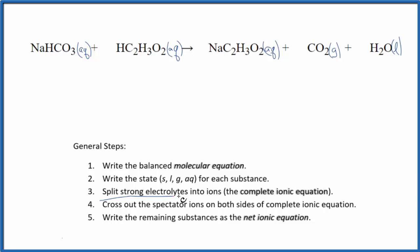Now we can split the strong electrolytes into their ions. That'll give us our complete ionic equation. So sodium on the periodic table has a 1 plus, and the bicarbonate ion, the whole thing, is 1 minus.